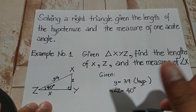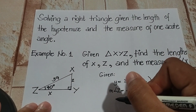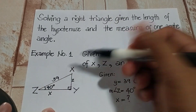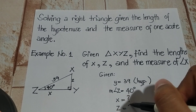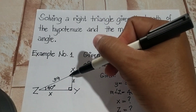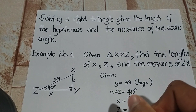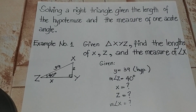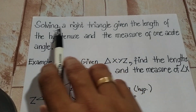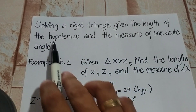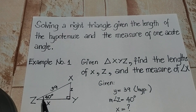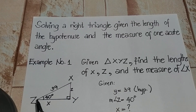We are asked to find the length of side X, the length of side Z, and the measure of angle X. We are solving right triangles given only the hypotenuse and one acute angle. The angle given is 40 degrees, and the hypotenuse is 39.